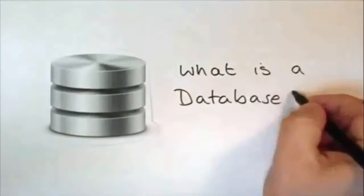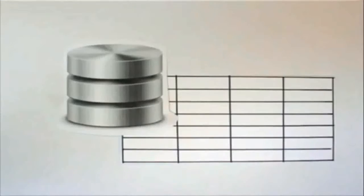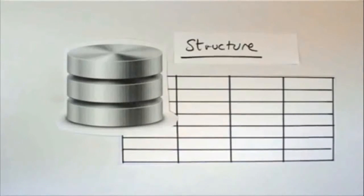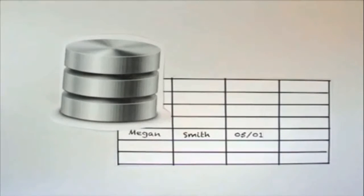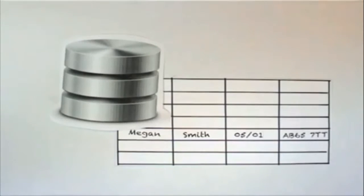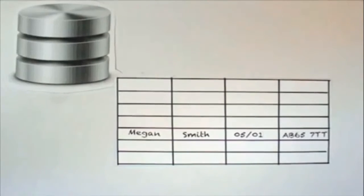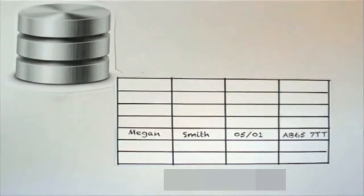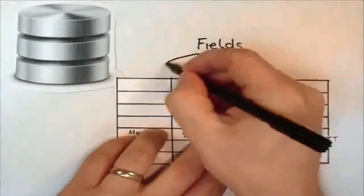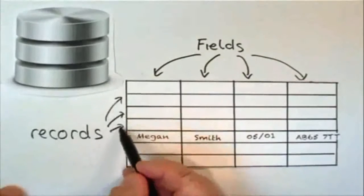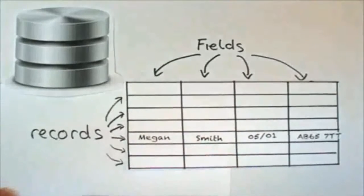So what is a database? Databases are organized. Databases have a structure, and all the data we store in them fits into this structure. They store data in columns of fields and rows of records.